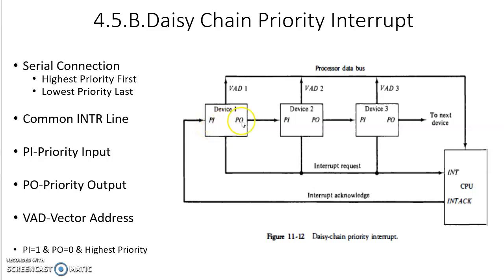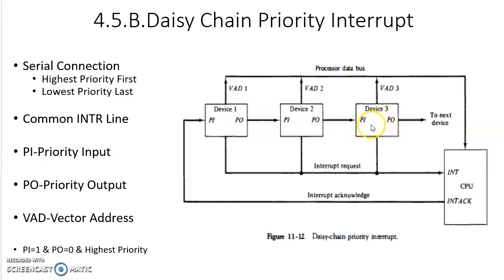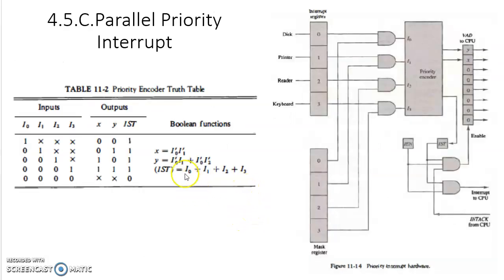If the highest priority device has not sent the interrupt request, the signal passes to device 2 through the priority output (PO). The interrupt acknowledgement is received at PI (priority interrupt input) and passes to the next device through PO only when device 1 has not sent the request. If device 1 did send the request, its vector address is sent to the CPU and the interrupt service routine is executed. In this fashion all devices are checked — this wastes time, so this is not the best method.